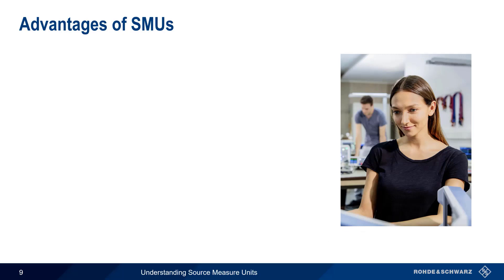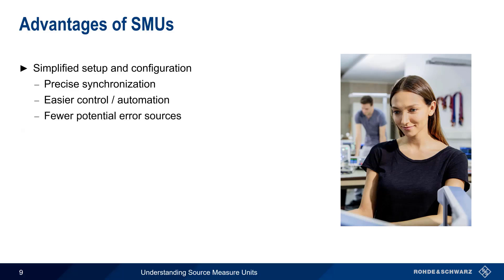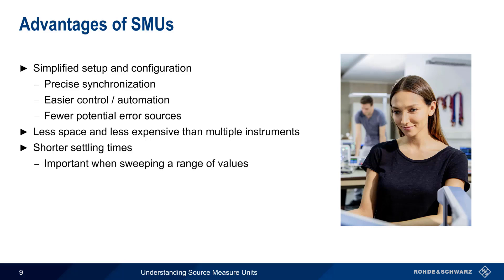In addition to the ability to operate in different quadrants, source measure units have a number of additional advantages. They are easier to set up and configure due to the fact that both source and measurement functionality are integrated into a single instrument. This in turn provides very precise synchronization, easier control and automation, and fewer potential sources of error. One instrument also takes up less bench space and is usually less expensive than using multiple instruments. But source measure units offer advantages that go beyond the simple integration of source and meter. Source measure units usually have shorter settling times, that is, how long it takes the source output to reach a stable state. This is important when we need to sweep a range of values and make a large number of measurements, since shorter settling times translates into a faster overall measurement. Furthermore, source measure units generally have much higher precision and a wider operating range than stand-alone power supplies or digital multimeters.